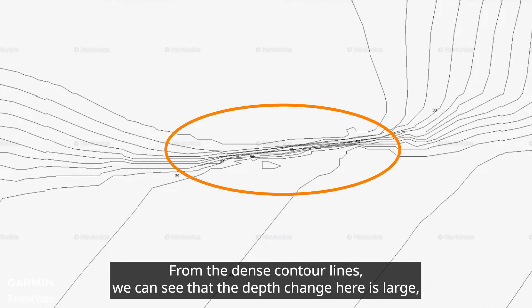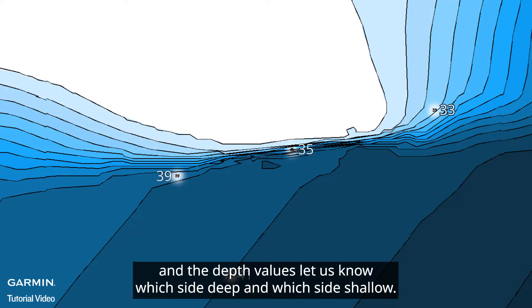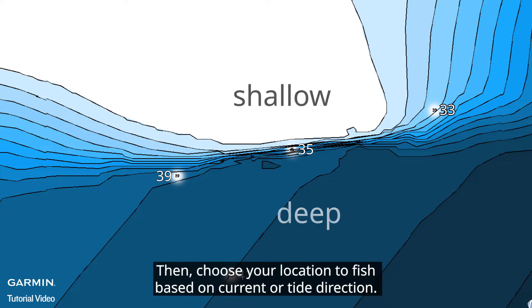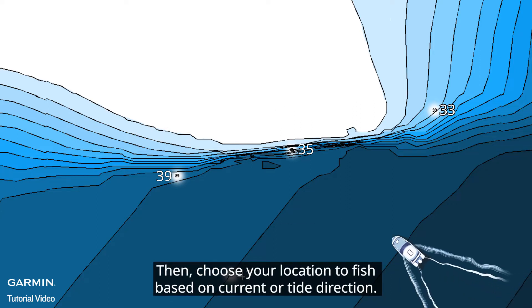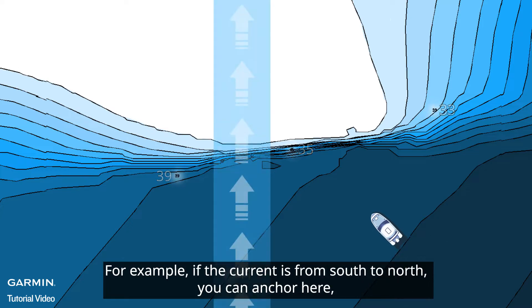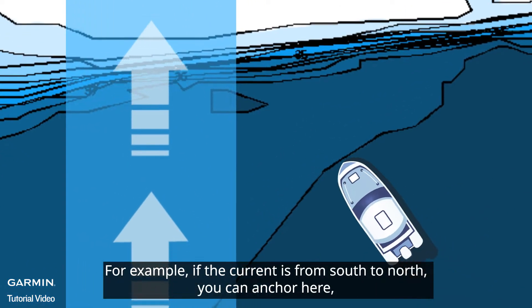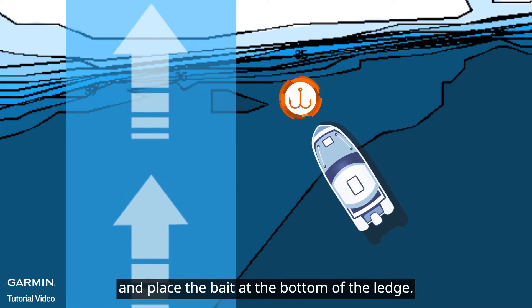From the dense contour lines, we can see that the depth change here is large, and the depth values let us know which side is deep and which side is shallow. Then, choose your location to fish based on current or tide direction. For example, if the current is from south to north, you can anchor here and place the bait at the bottom of the ledge.